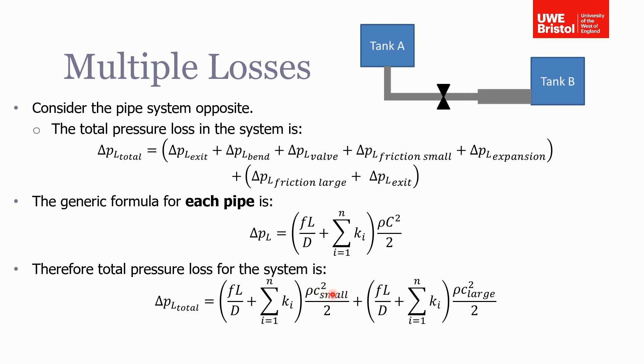Plus the friction in the larger diameter pipe plus the sum of the minor losses, of which there is actually only one, which is the exit loss, all times by the density and the velocity squared in the larger diameter pipe.